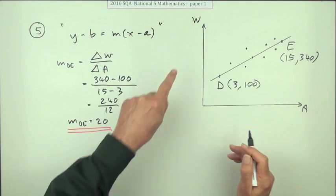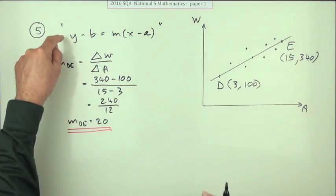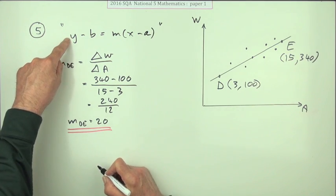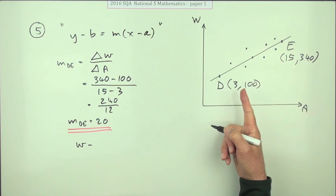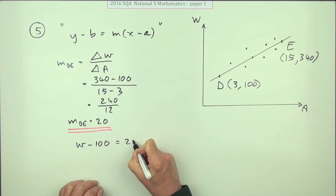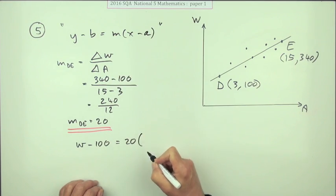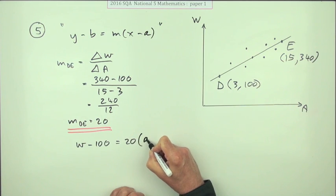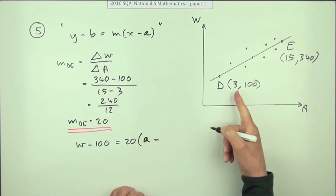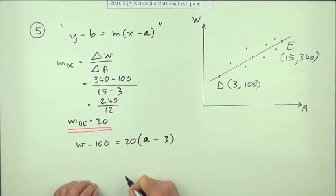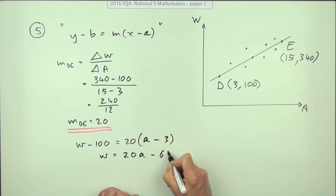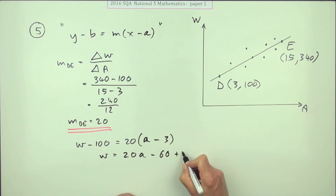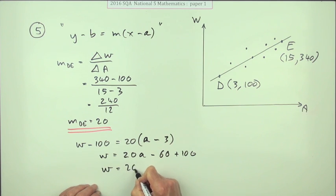Now we can use the equation, remembering it's w and a not y and x. So w minus 100 equals 20 times (a minus 3). Expanding that gives w = 20a minus 60 plus 100, so w = 20a + 40.